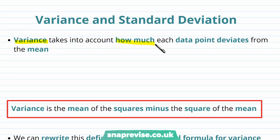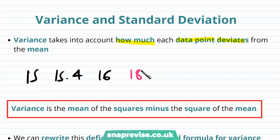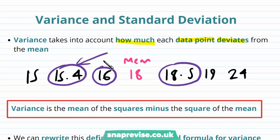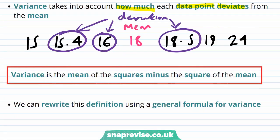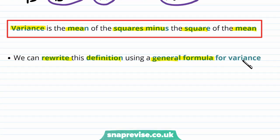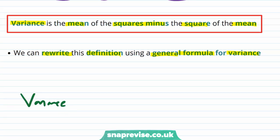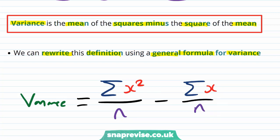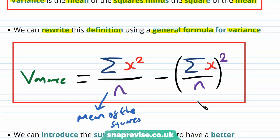Variance takes into account how much each data point deviates from the mean. If we have 15, 15.4, 16, 18, 18.5, 19, and 24, and our mean is 18, then we take each data point separately and look at how each deviates from the mean. Variance is the mean of the squares minus the square of the mean. We can rewrite this using a general formula: the variance is the sum of X squared all divided by n, minus the mean all squared.